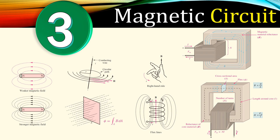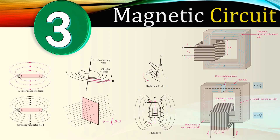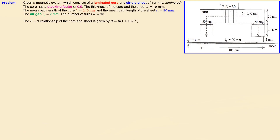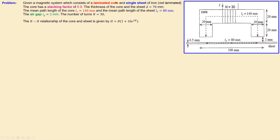Welcome back to a new video about magnetic circuits — this is example number three. In this example we'll discuss a more practical situation where we see an electromagnet which has a connection with the sheet. The problem involves a magnetic system consisting of a laminated core and a single sheet of iron.